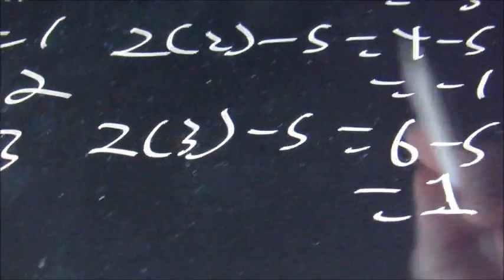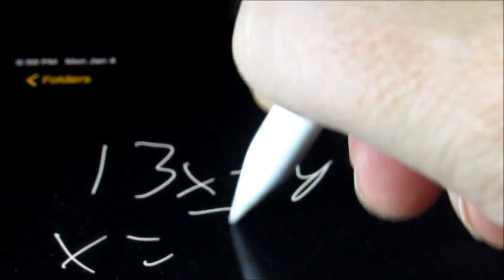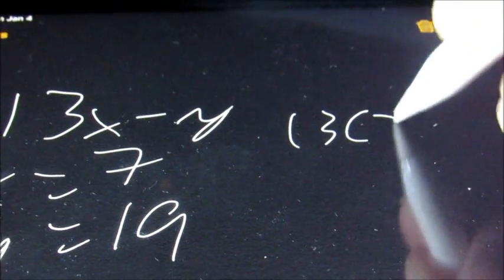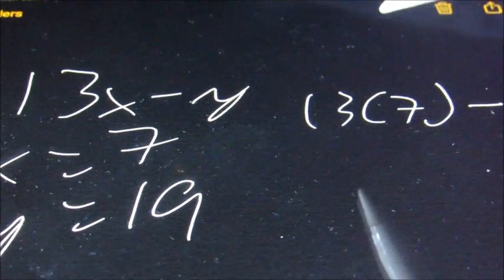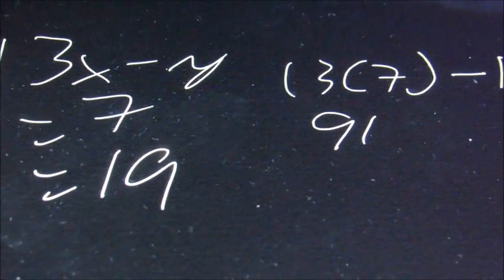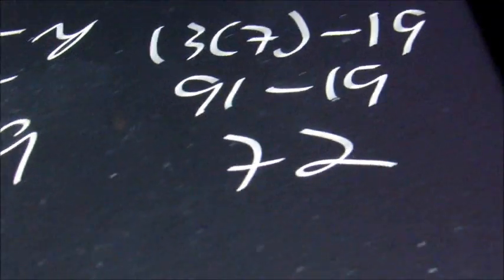So you're going to have quite a few that are just like that. Then you'll have one that has 2 variables. Say we have 13x minus y when x equals 7 and y equals 19. So we're going to put a 7 in for x and a 19 in for y, so it's going to be 13 times 7 minus 19. 13 times 7 equals 91, minus 19, and that equals 72.